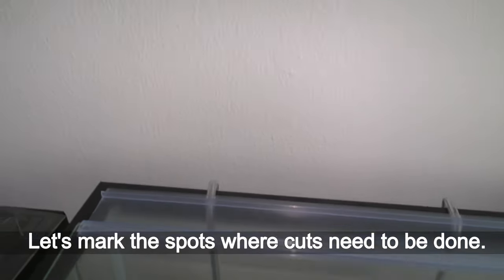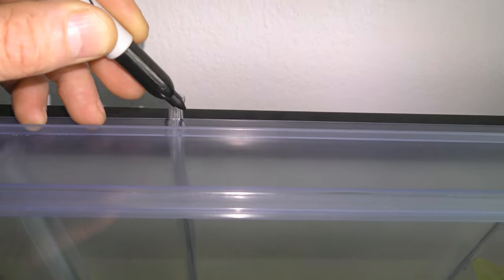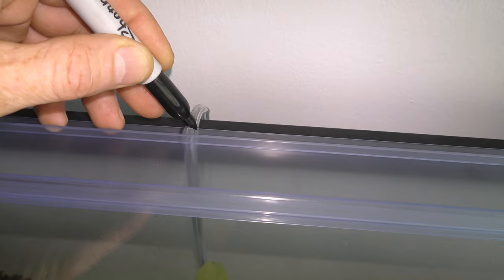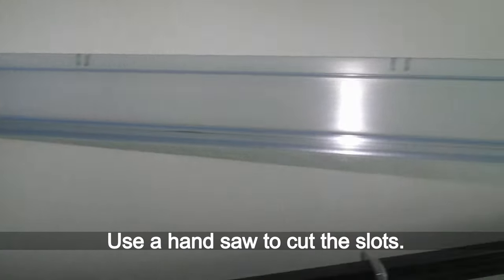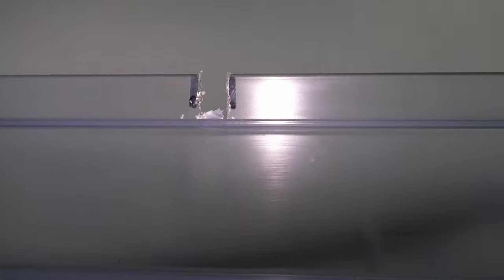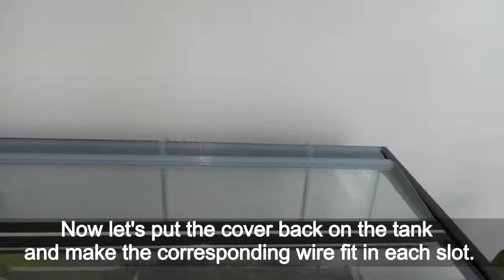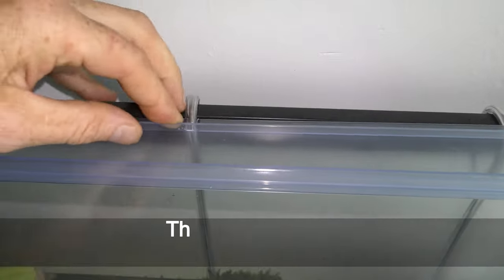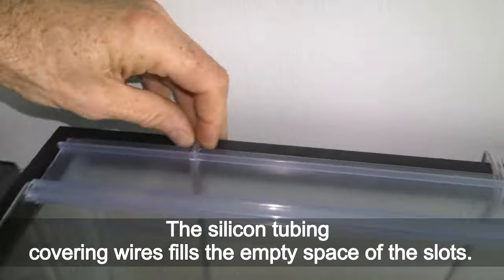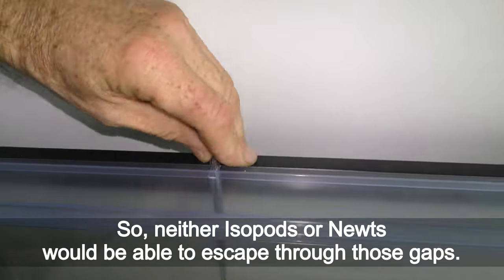Let's mark the spots where cuts need to be done. Use a hand saw to cut the slots. I use round-nose pliers to remove the cut parts of the slots. The plastic is really tough and holds great. Now let's put the cover back on the tank and make the corresponding wires fit in each slot. The silicone tubing covering wires fills the empty space of the slots. So neither isopods or newts would be able to escape through those gaps.